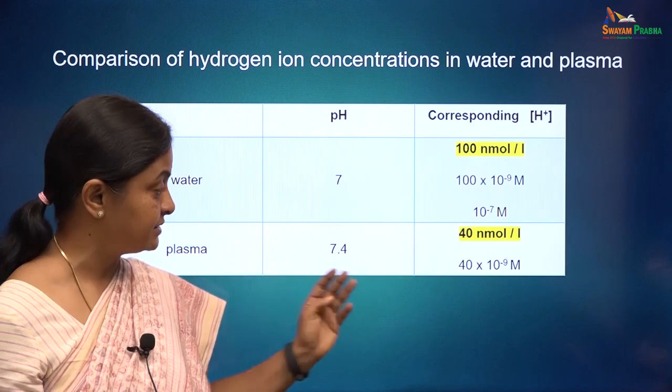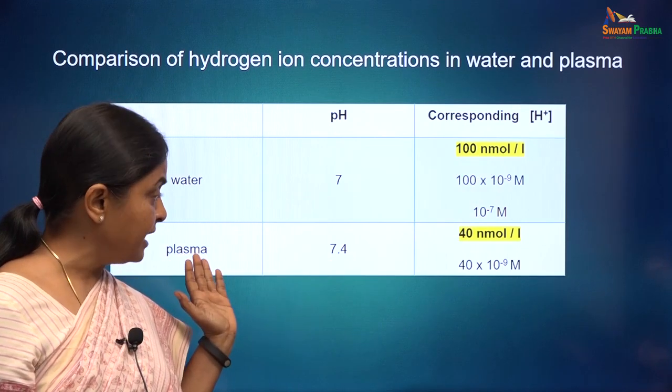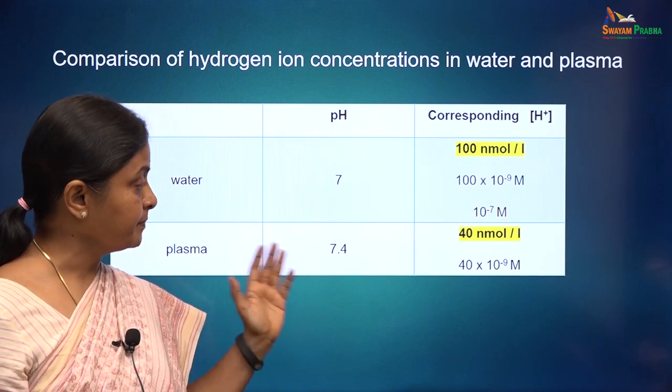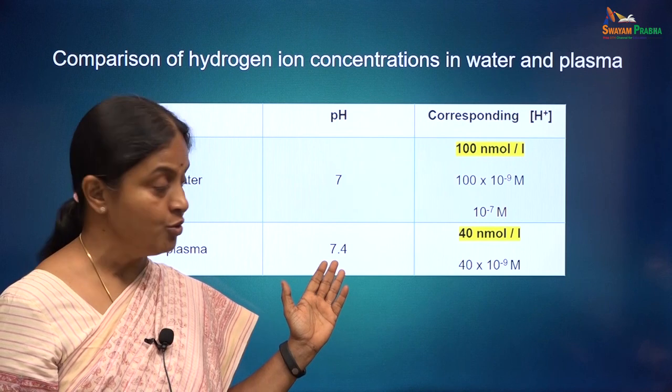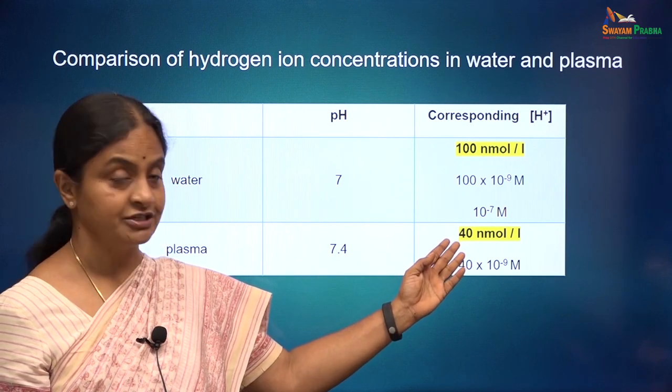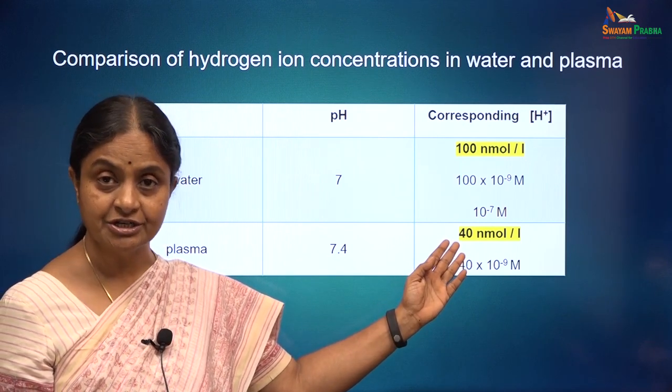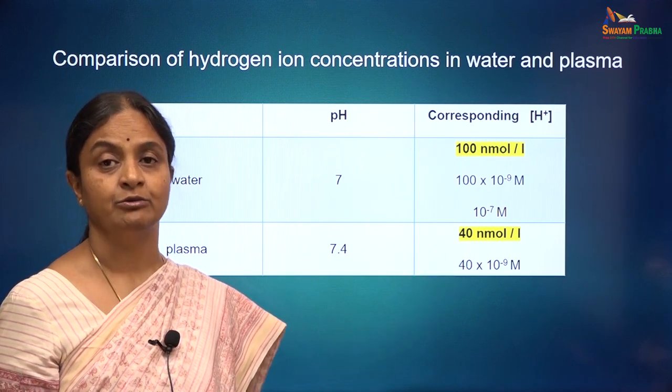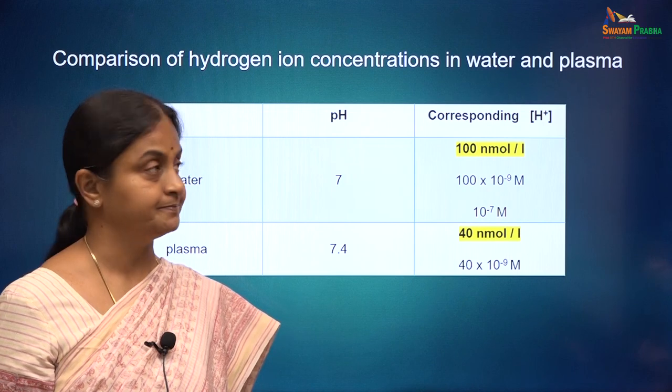Water has a pH of 7 and the corresponding free hydrogen ion concentration is 100 nanomolar. Plasma has a pH of 7.4 and the free hydrogen ion concentration is 40 nanomoles per liter.